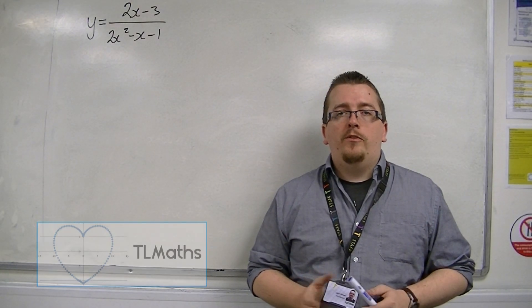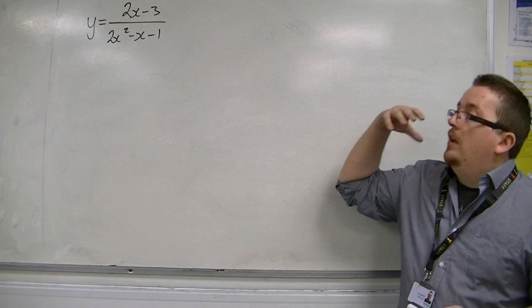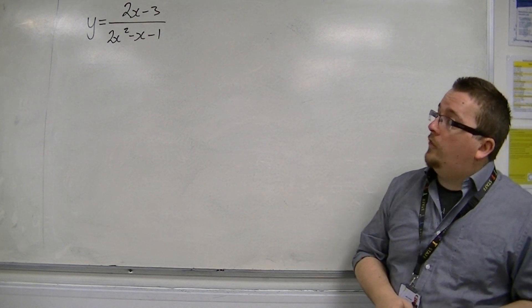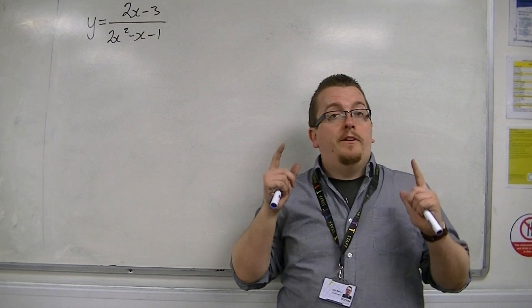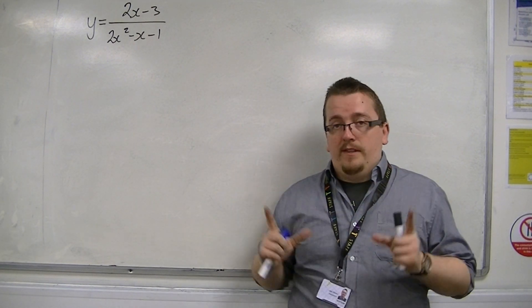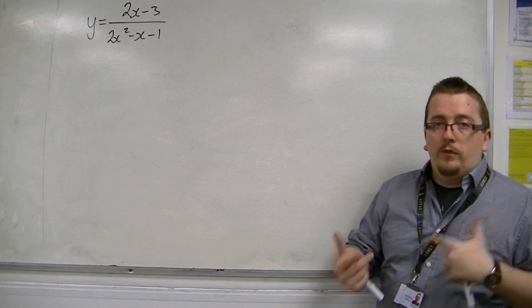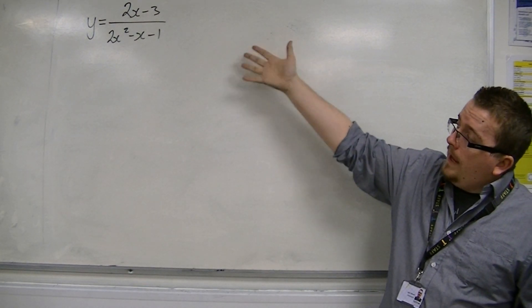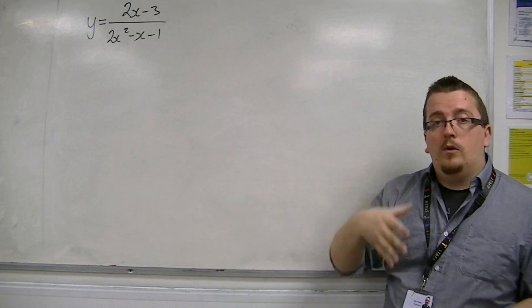OK, so in this video we're going to do things the other way around. We are going to be working with y equals 2x minus 3 over 2x squared minus x minus 1, and I'm going to first find the stationary points of this curve without using differentiation techniques, because that's stuff that we learn in Core 3. And then in the second video I'm going to sketch it.